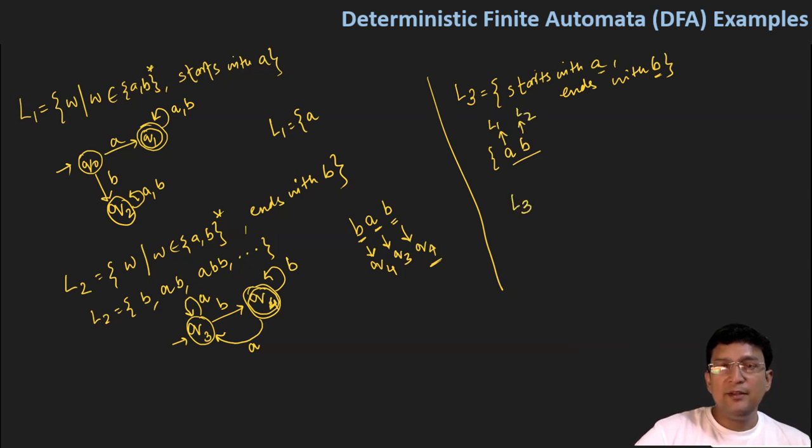Can I not say that L3 language is equal to L1 concatenation L2? Because L1 language says that it starts with A and L2 language says that it is ending with B over the same alphabet set AB. So I can say that L3 language is equal to L1 concatenation L2.